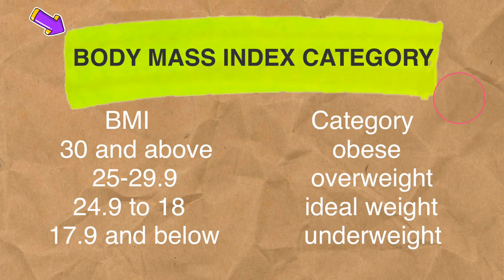Here are the different BMI index categories: A BMI of 30 and above is considered obese. BMI of 25 to 29.9 is overweight. BMI of 18 to 24.9 is ideal weight. BMI of 17.9 and below is considered underweight.